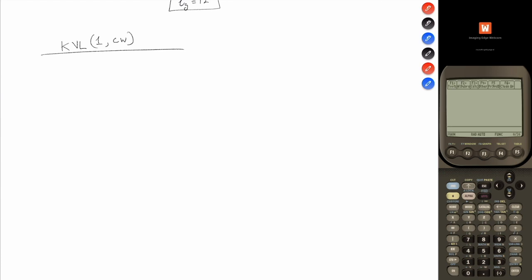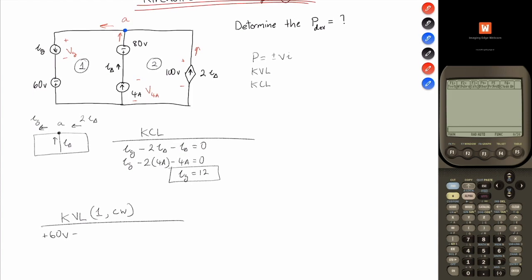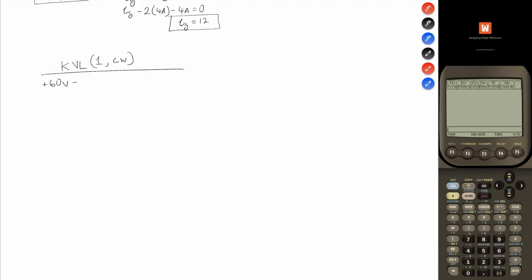For KVL1, we have positive 60 volts, then the voltage across IG — let's name that VG. Let's name the voltage across the 4-amp source V4amps. We have the 100 volts for the independent source. So now we have negative VG, negative 80 volts, and negative V4amps equals 0.